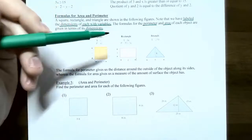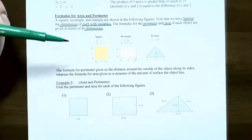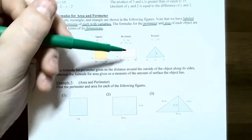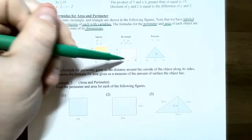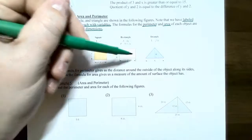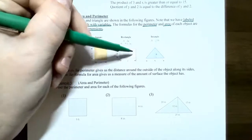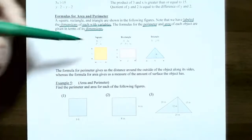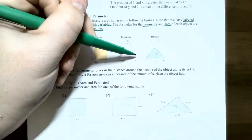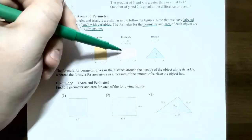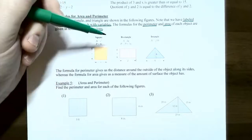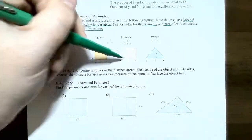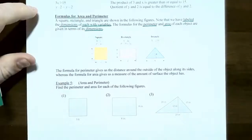A rectangle is very similar to a square except the length and the width are not the same. We'll use w for width and l for length. You have two widths and two lengths. So perimeter is w plus w is 2w, and l plus l is 2l, so 2l plus 2w is the perimeter of a rectangle. The area of a rectangle is length times width, so l times w.